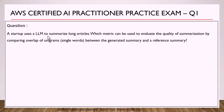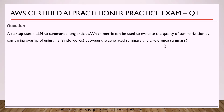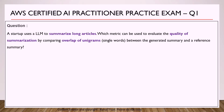The first question says: a startup uses an LLM to summarize long articles. Which metric can be used to evaluate the quality of summarization by comparing overlap of unigrams between the generated summary and a reference summary? The key concepts in this question are: using an LLM to summarize long articles, evaluating the quality of summarization, and comparing overlap of unigrams.